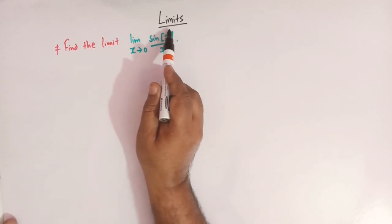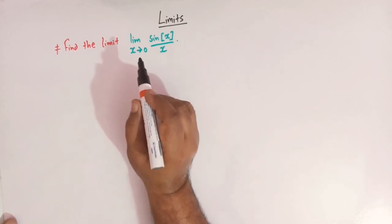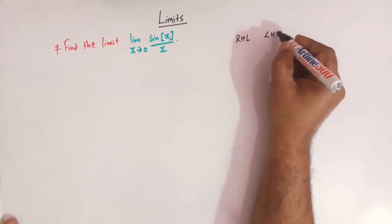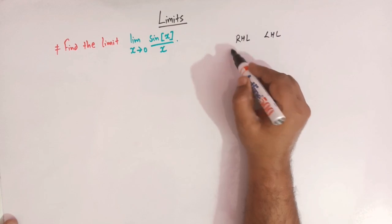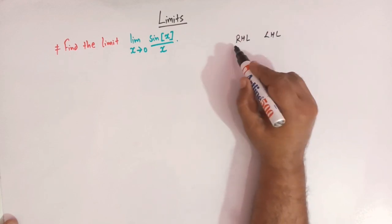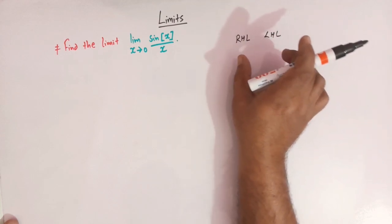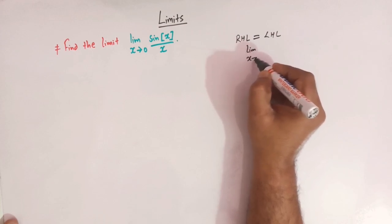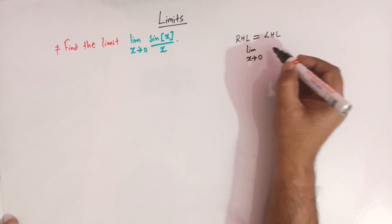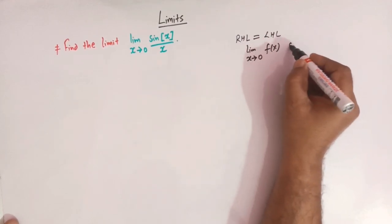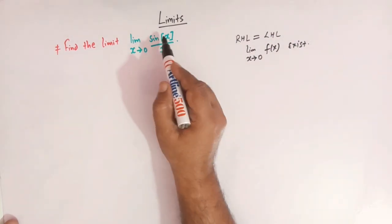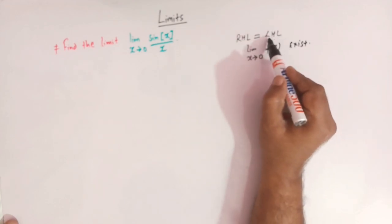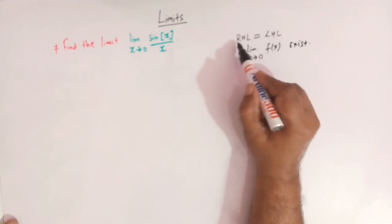In order to find out this limit, we will first find out the right hand limit and then we will find out the left hand limit. When the right hand limit and the left hand limit both exist and are equal, then we can say that the limit x tends to 0 of this function exists. So for the limit x tends to 0 to exist, both the right hand limit and the left hand limit should exist and they must be equal.